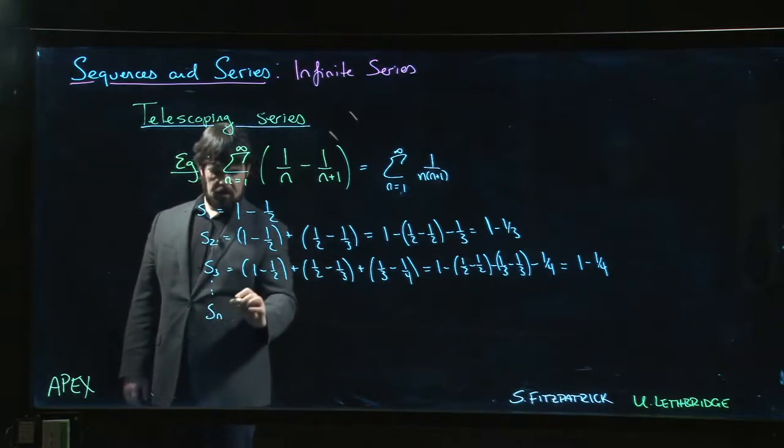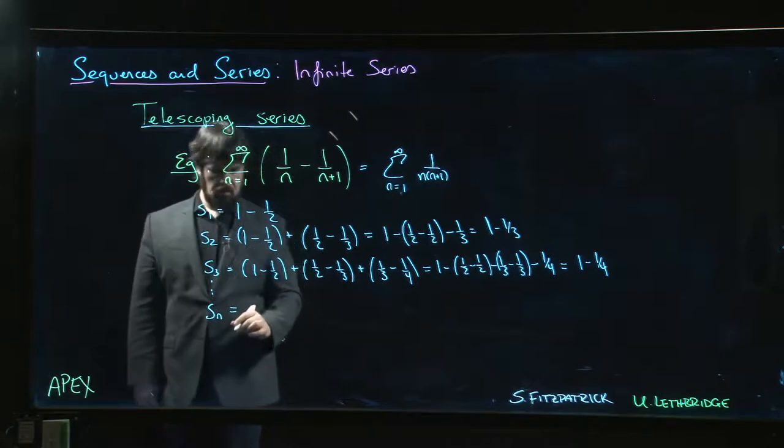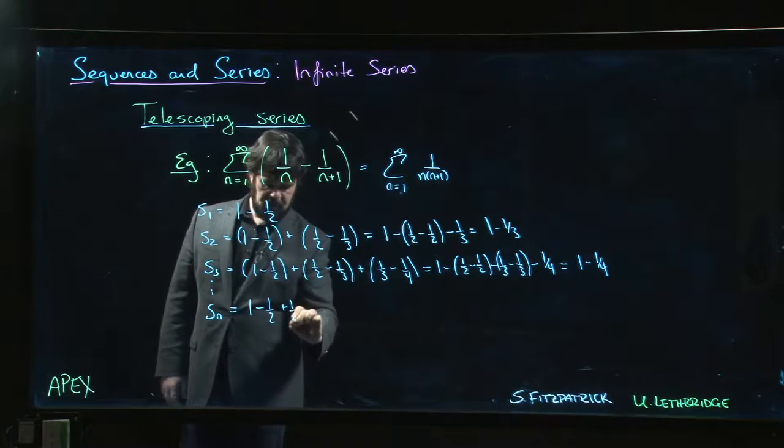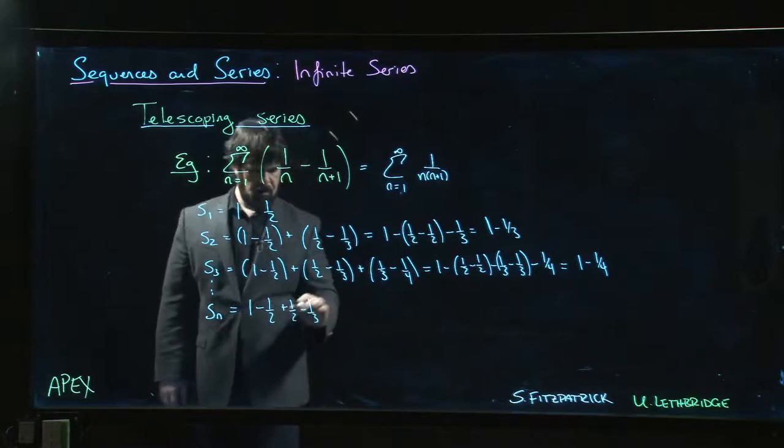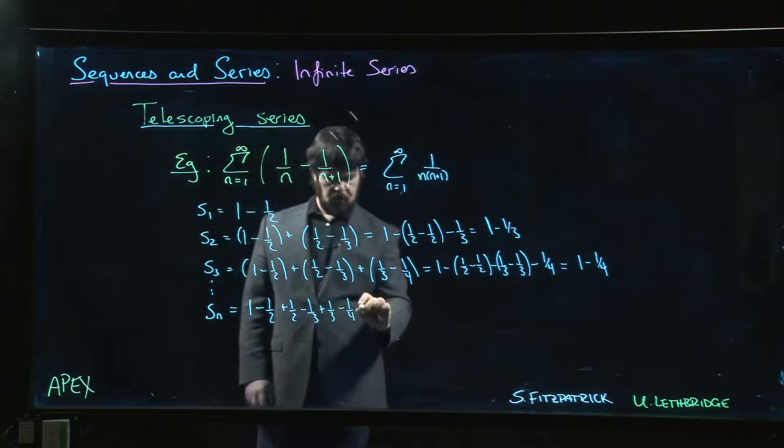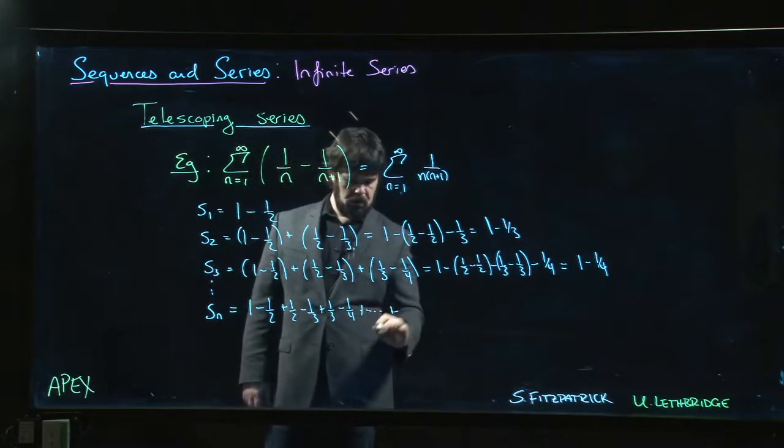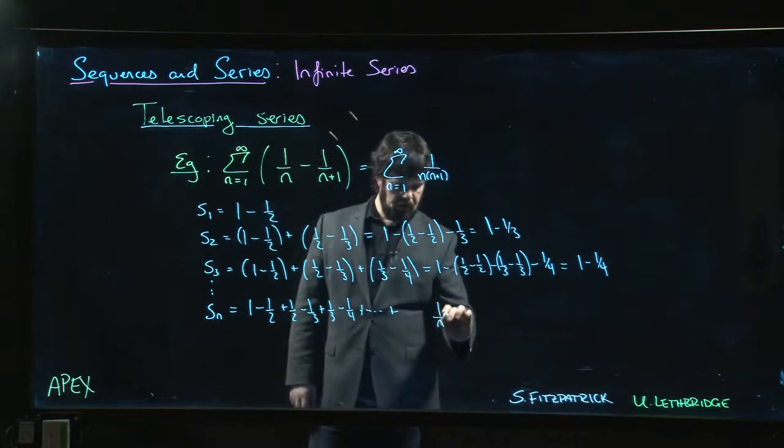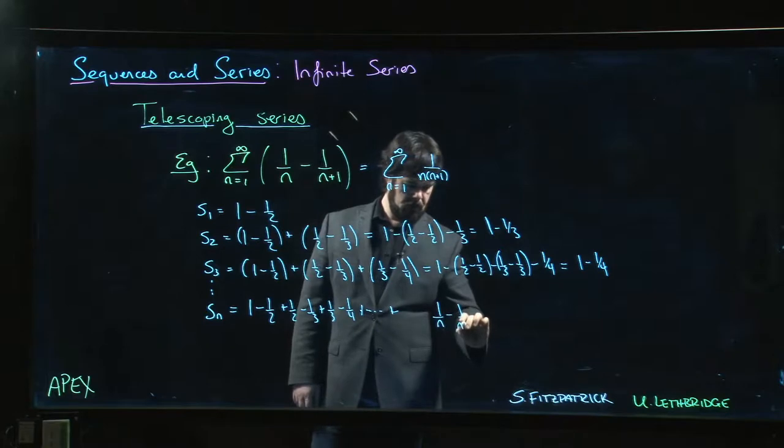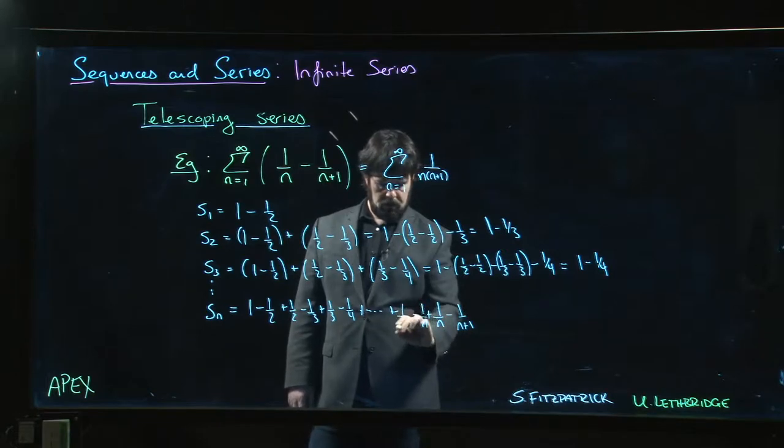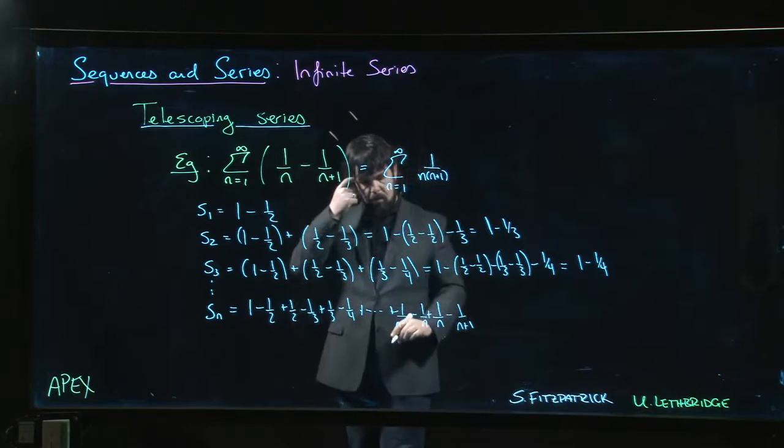We would have 1 minus 1 half and then plus 1 half minus 1 third and then plus 1 third minus 1 quarter and so on down to, well, so the very last term will be 1 over n minus 1 over n plus 1. And of course, just before that, it would have been minus 1 over n minus 1 and so on.